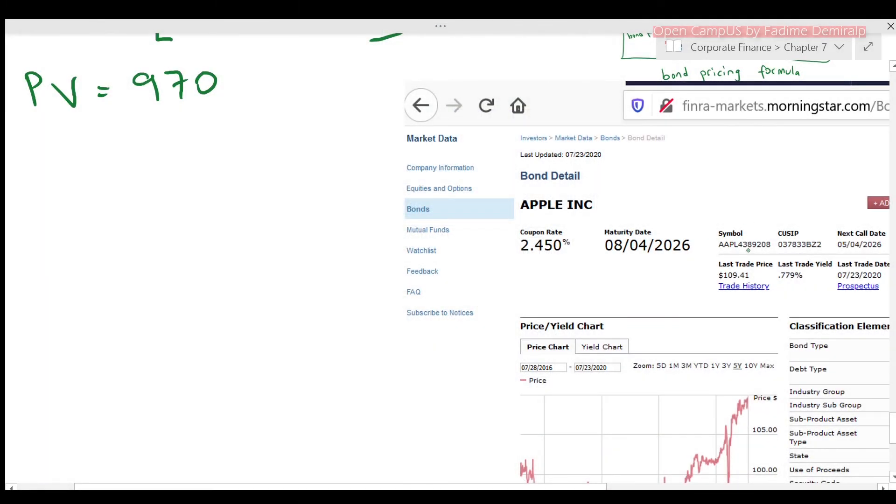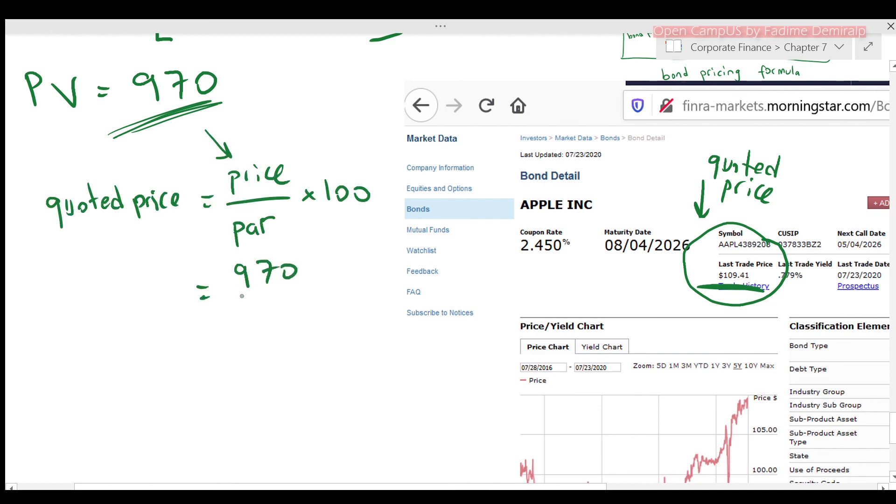If we go back to bond details, you also see the last trade price. It's in hundreds, not in thousands. The price you see here is the coded price. When we write the price as percent of the par, the coded price of $970 will be $97. We can find it by using a formula if you wish. So divide $970 by 1000 and multiply by 100. Coded price is 97.